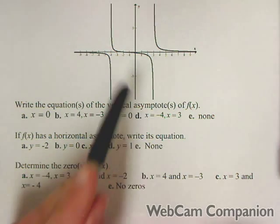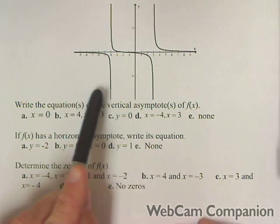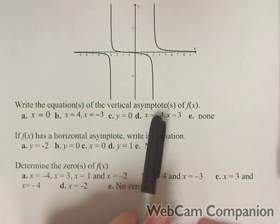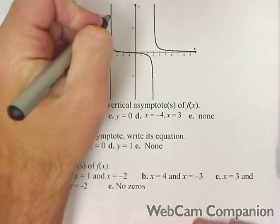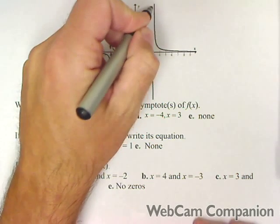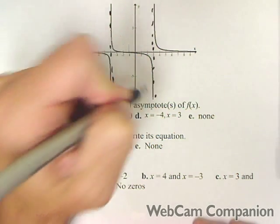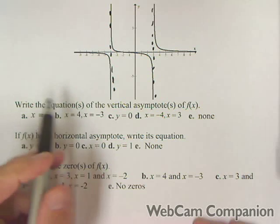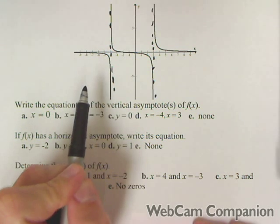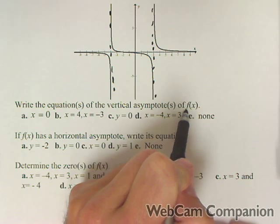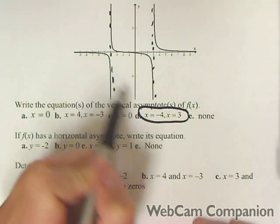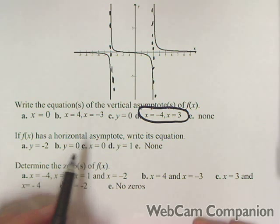We have a rational function given by a graph, and we need to determine the equations of the vertical asymptotes. We can see we have one at negative four and one at three. The equations of vertical asymptotes are written as x equals, so x equals negative four and x equals three are our two vertical asymptotes.